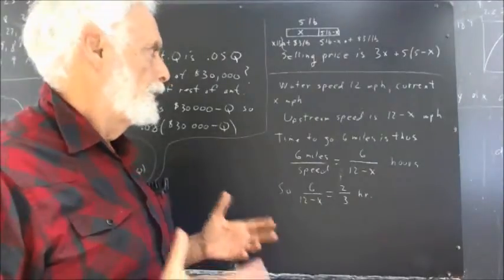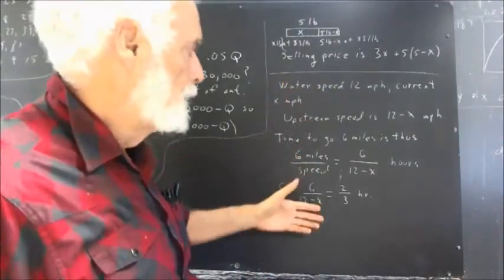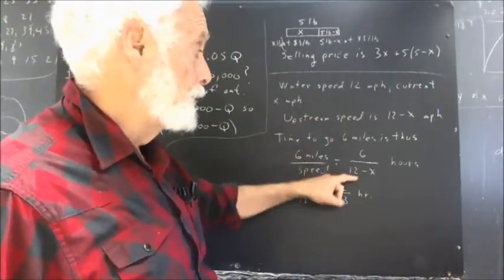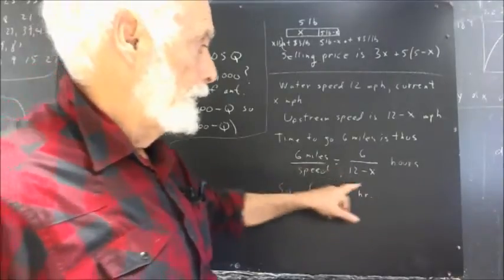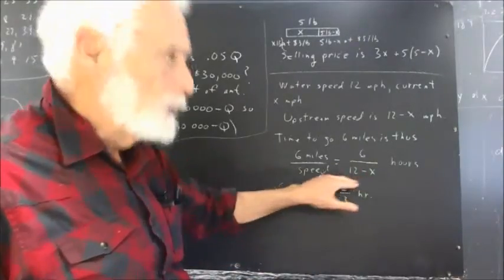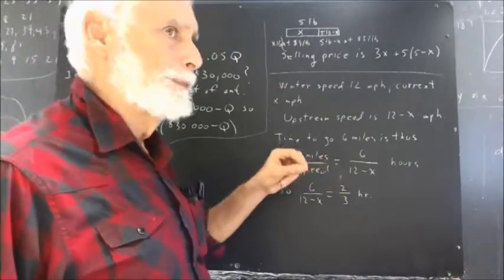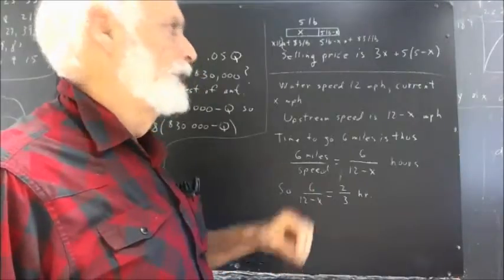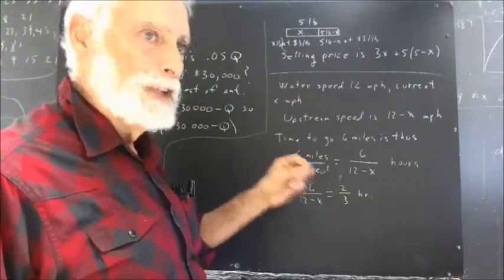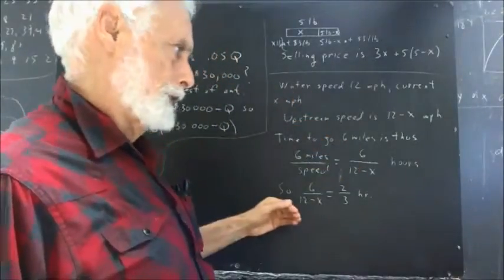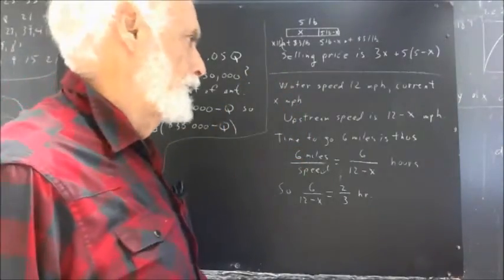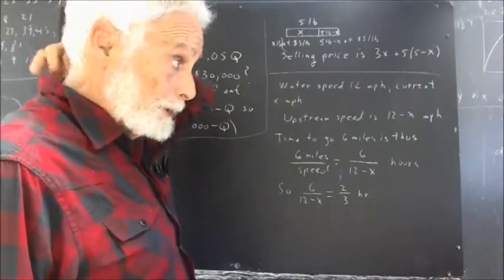If people had done that, then we wouldn't have had to spend time talking about how to understand that the time to go 6 miles in this situation upstream is 6 over (12 minus X) hours. That would have been immediate. People would remember that because I think people understood it five days ago. The fact that they no longer understand it tells me that there are things people should be doing that they're not doing. The point of this is not to take extra time. This saves you time because then you have this idea and you don't have to puzzle over it again. You learn how to set up and solve problems if you do everything in the most orderly and efficient possible way. That's what this is all about, efficiency.